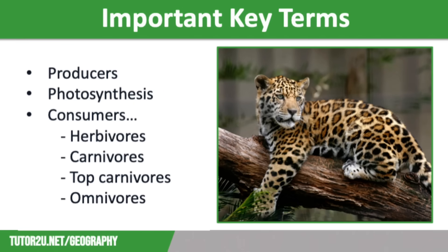There are a number of key terms essential to understand in the ecosystem topic. The first is producers. These convert energy from the environment — mainly sunlight — into sugars, also known as glucose. The most obvious producers are plants that convert energy from the sun by photosynthesis, and they use this to produce their own tissue in leaves and stems.